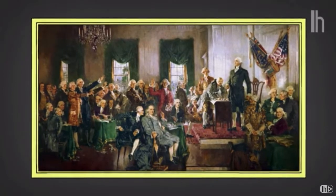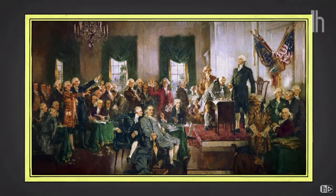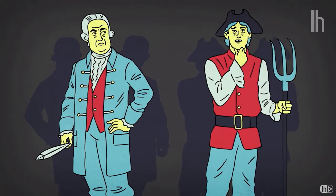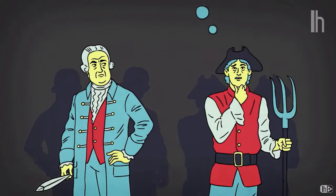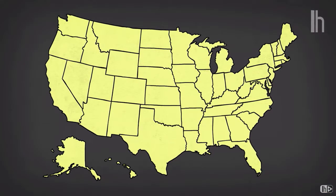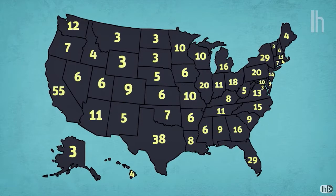At the Constitutional Convention in 1787, the founding fathers were trying to devise a balanced way to elect a president. They didn't want the president selected solely by political elites like Congress or the state legislature, and they were a little terrified at the idea of a direct popular election — since there was no telling who the masses might pick. So they came up with a compromise: the electoral college.